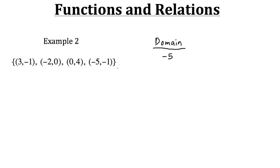The least number in the domain is negative five, so negative five is part of the domain. Then the next least is negative two, then zero, and then three. So the domain is all the different inputs within our relation, and for these four ordered pairs we have a domain of negative five, negative two, zero, and three.